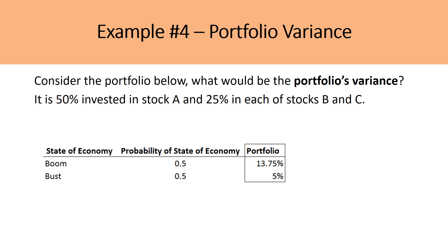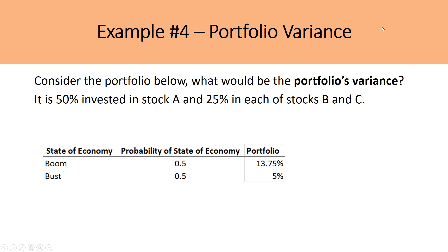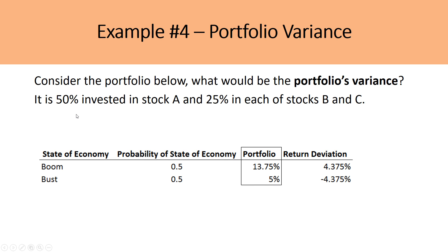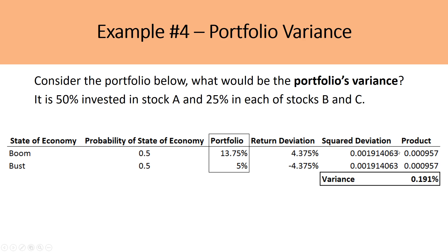The expected return of the portfolio is 0.5 × 13.75% + 0.5 × 5% = 9.375%. We then subtract 9.375% from 13.75% and from 5% to find the return deviations. We square the return deviations, multiply each by the probability of its state, find the products, and sum them up — and that is the portfolio's variance. The key takeaway: simplify by finding the expected portfolio return in each state first, then follow the stock variance procedure to find the portfolio variance.